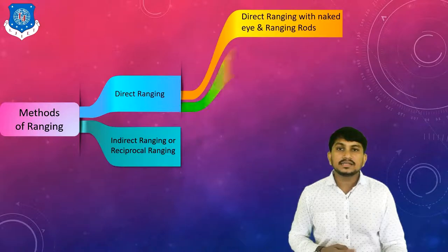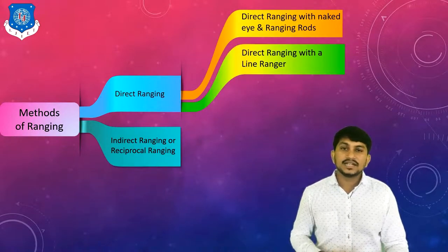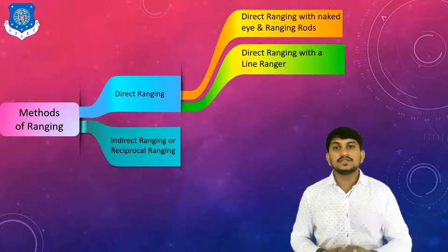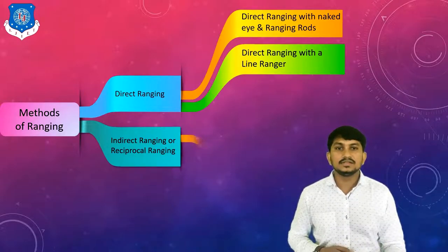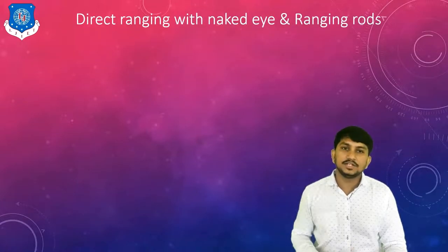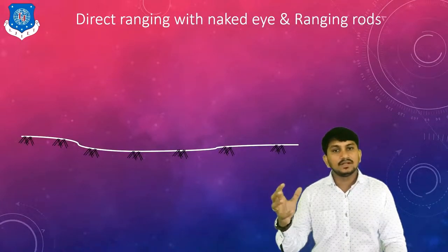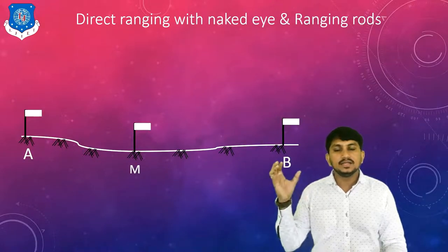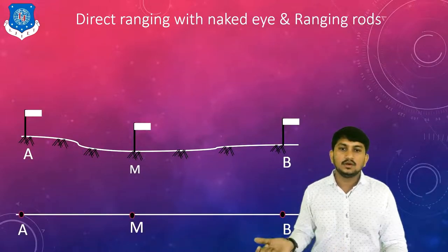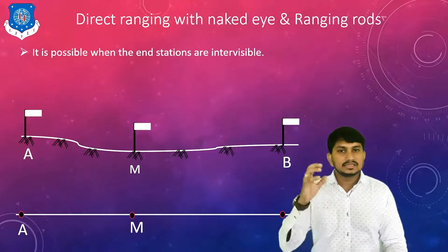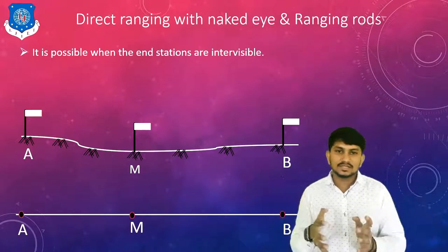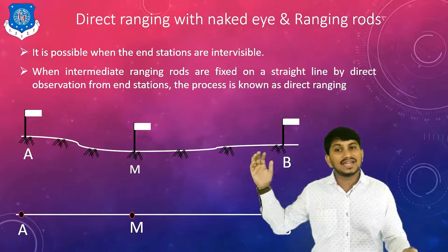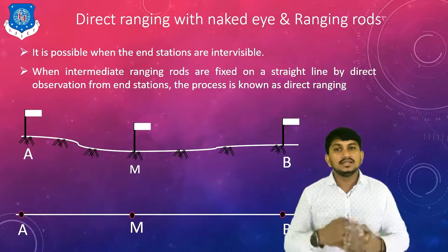Direct ranging is carried out by two methods: first, direct ranging using naked eye and ranging rods, and second, direct ranging with one instrument called a line ranger. In direct ranging with naked eye and ranging rods, suppose there is a survey line with station A and station B, and we have to find station M on the straight line. This is possible when the stations are inter-visible and intermediate ranging rods are fixed by direct observation from end stations A and B.